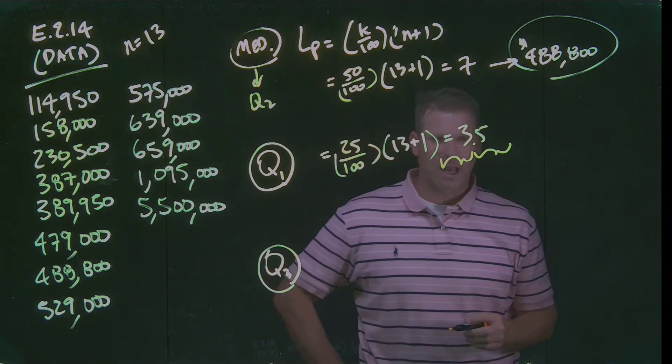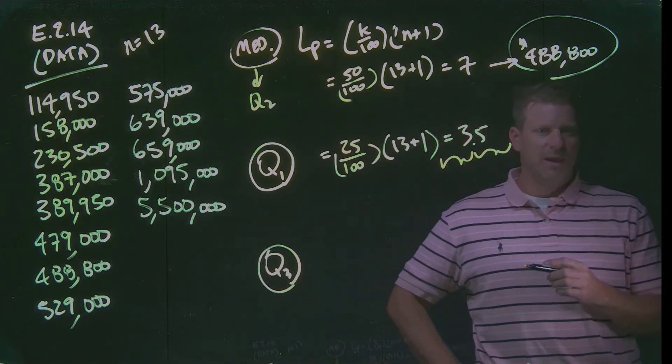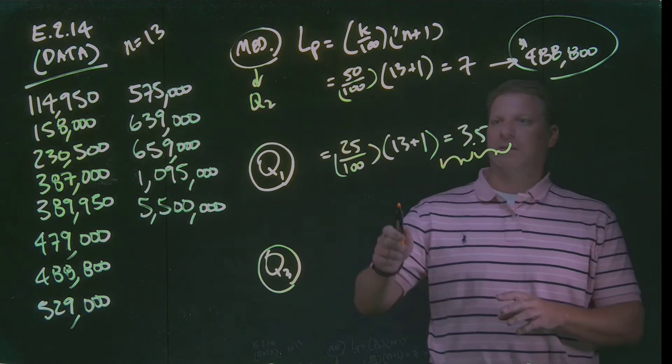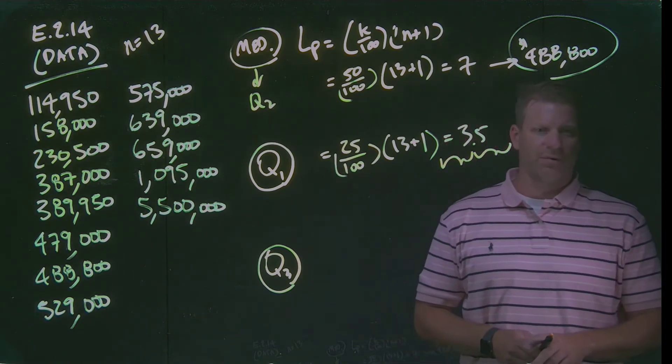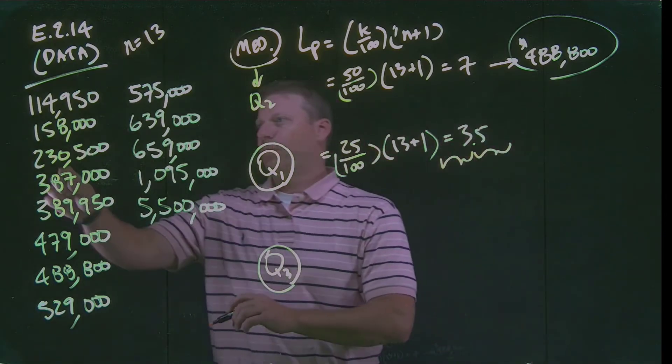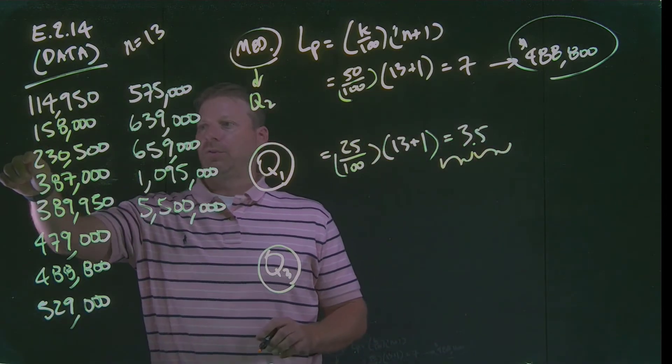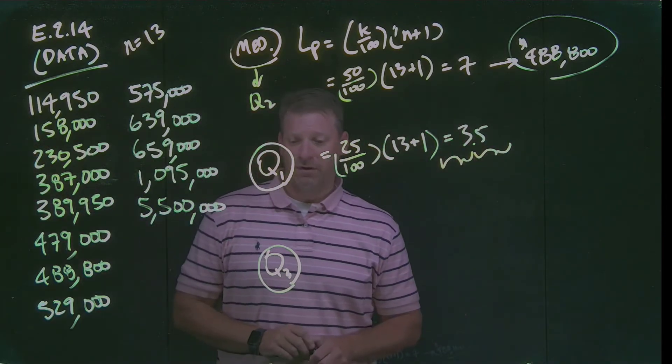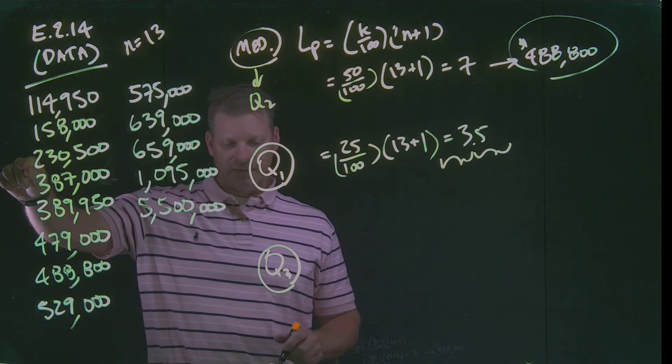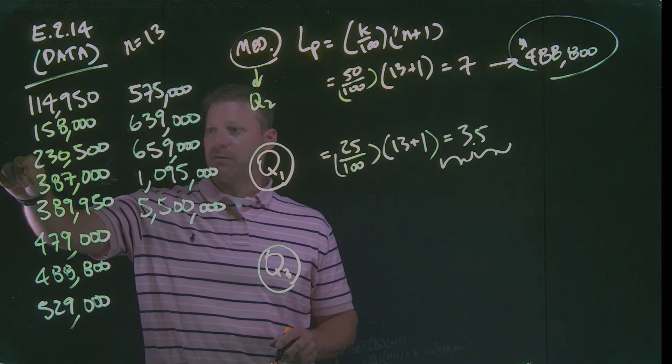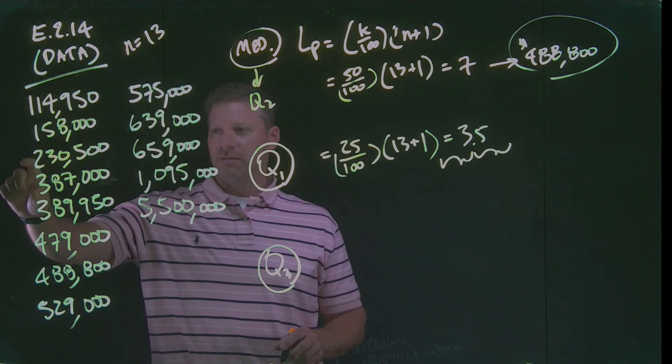Basically, we're going to kind of treat it like a discrete value and a continuous value. We're going to count into three distinct locations, and then we're going to go half of the distance between that 3rd and that 4th. So if I go into my third data point, 1, 2, 3, I have $230,500. And then we have to go half of that distance between the $230,000 and the $387,000.